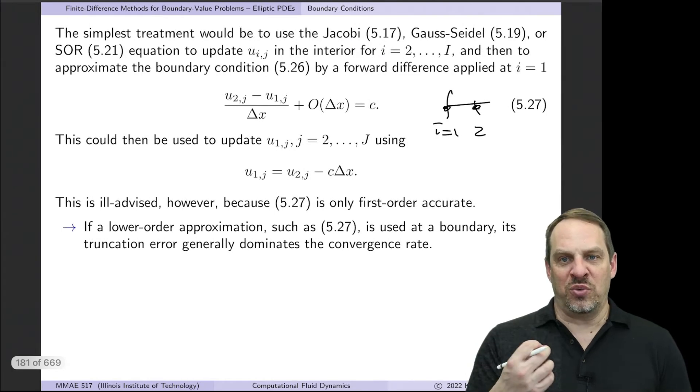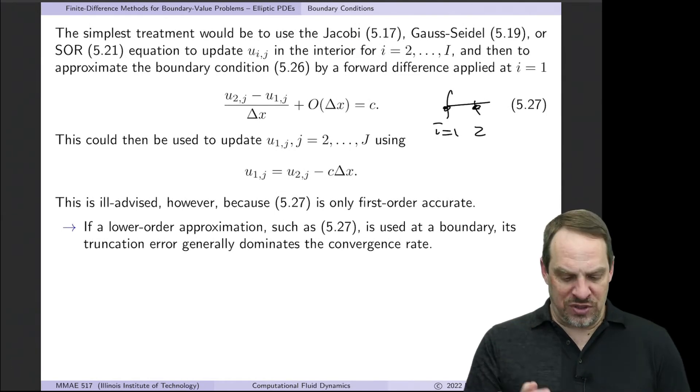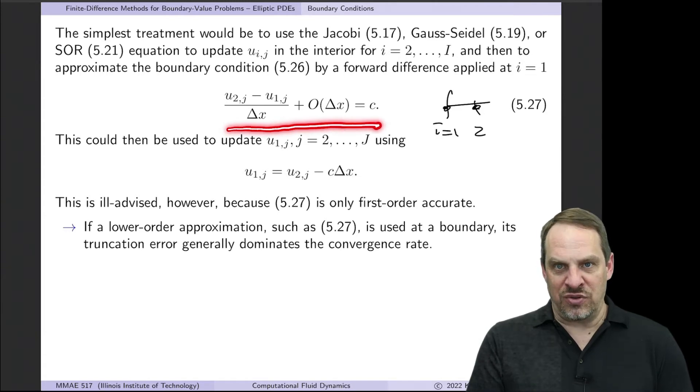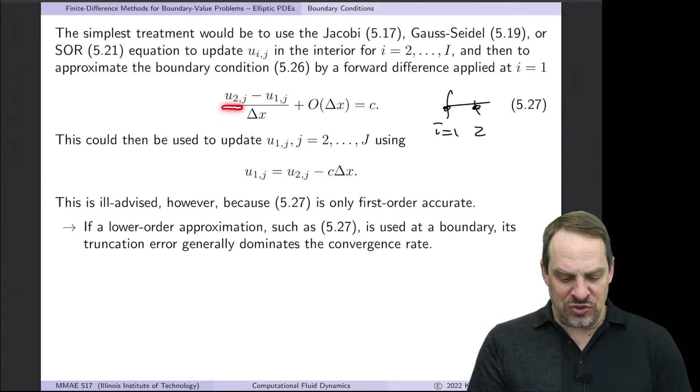Well, first let me show you what we don't do. So the tempting thing to do is, well, let's just apply our boundary condition at the boundary using a forward difference. So you notice this is U2J minus U1J. So if this is the boundary, then it's this point minus this point divided by the distance between them, which is delta X, and that's equal to C. I can solve for the value of U1J, the value on the boundary.